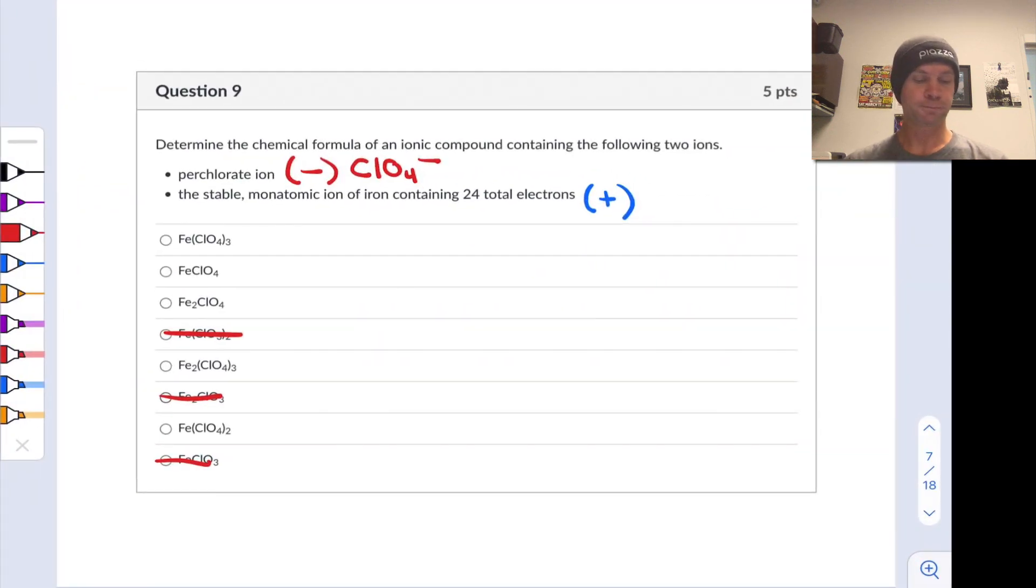But in the problem, the problem mentions that this ion has a total of 24 total electrons. So we've got two fewer electrons than protons. And so the ion we're dealing with here is Fe^2+.